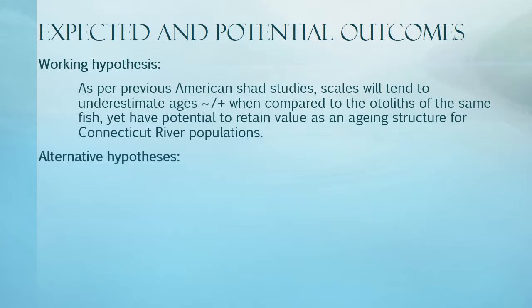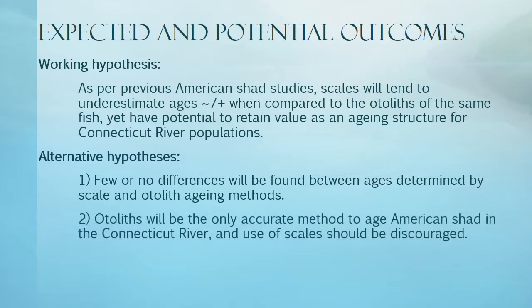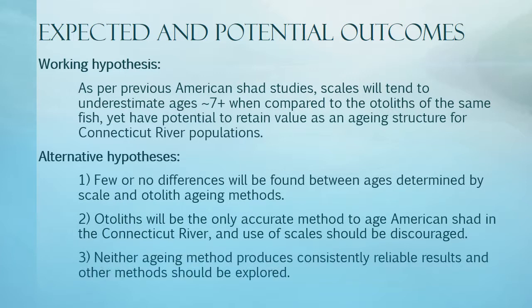After thoroughly examining previous studies, there is still potential for other outcomes. Few differences may be found between the two structures — this is possible if the population age structure is stretched too thin and not many older fish remain. Otoliths may be the only reliable aging method and use of scales should be discouraged, though hopefully this is not the case. While unlikely, it may also be possible that neither method produces reliable results, and other aging methods such as using vertebrae or opercula should be explored.